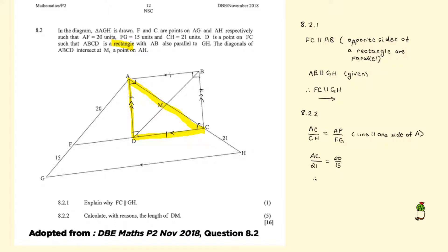So AC over 21 equals 20 over 15. If you plug this into the calculator, just multiply both sides by 21. We get that AC equals 28 units. So now you have this length AC.